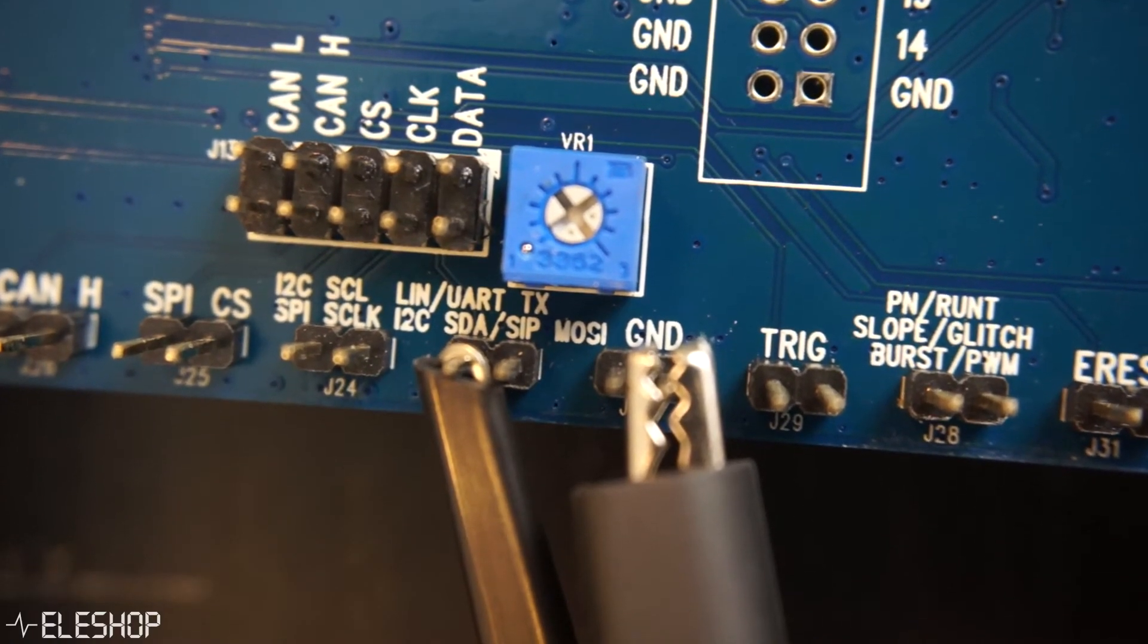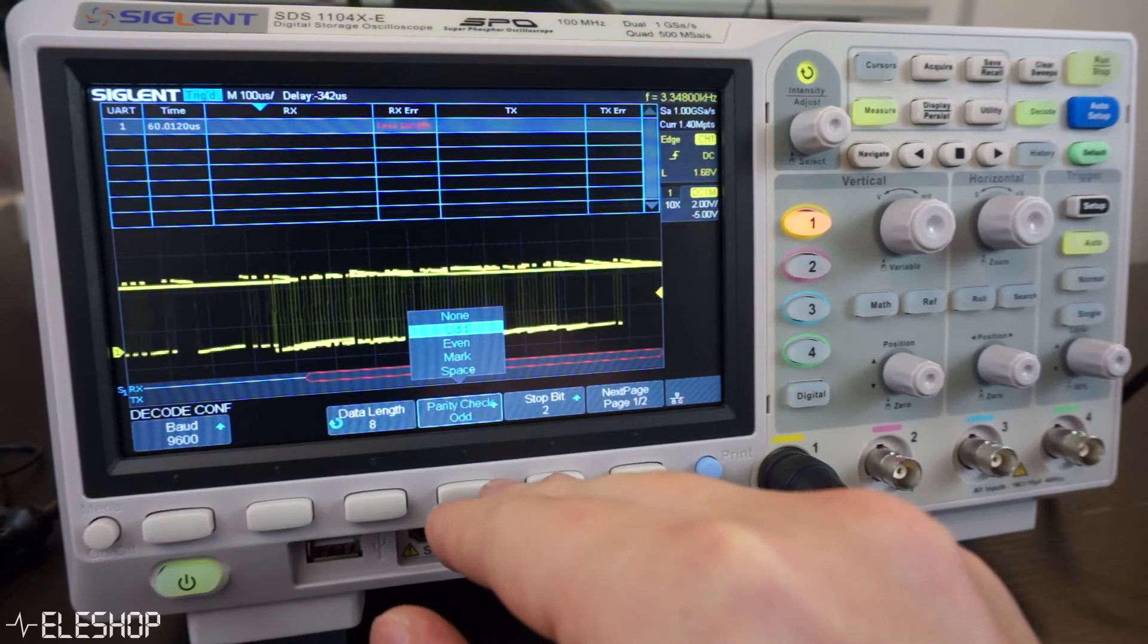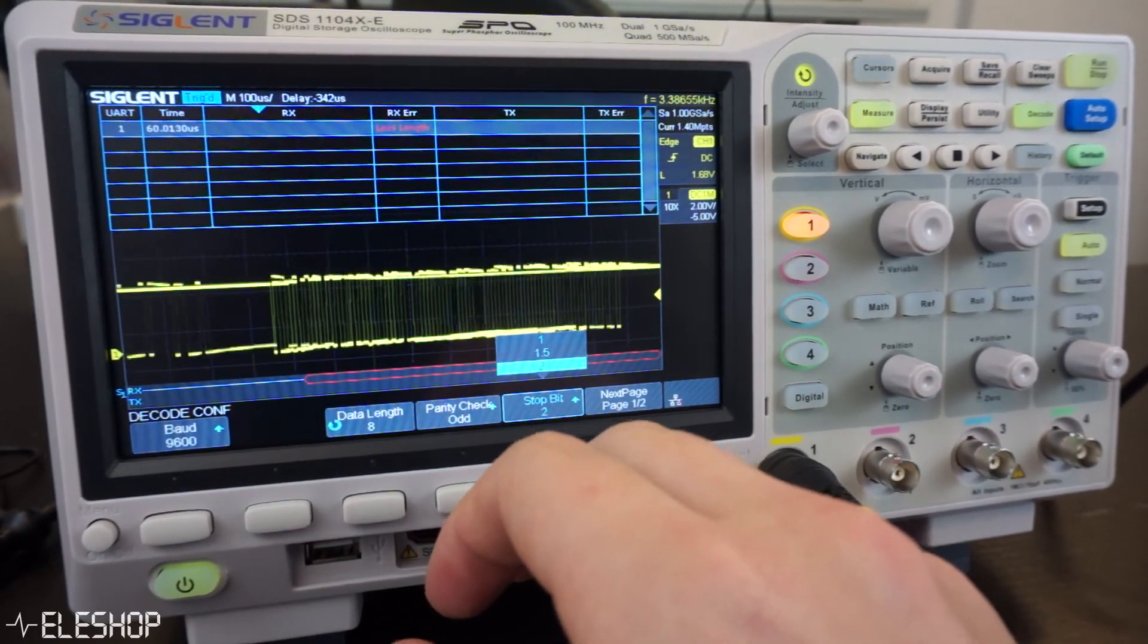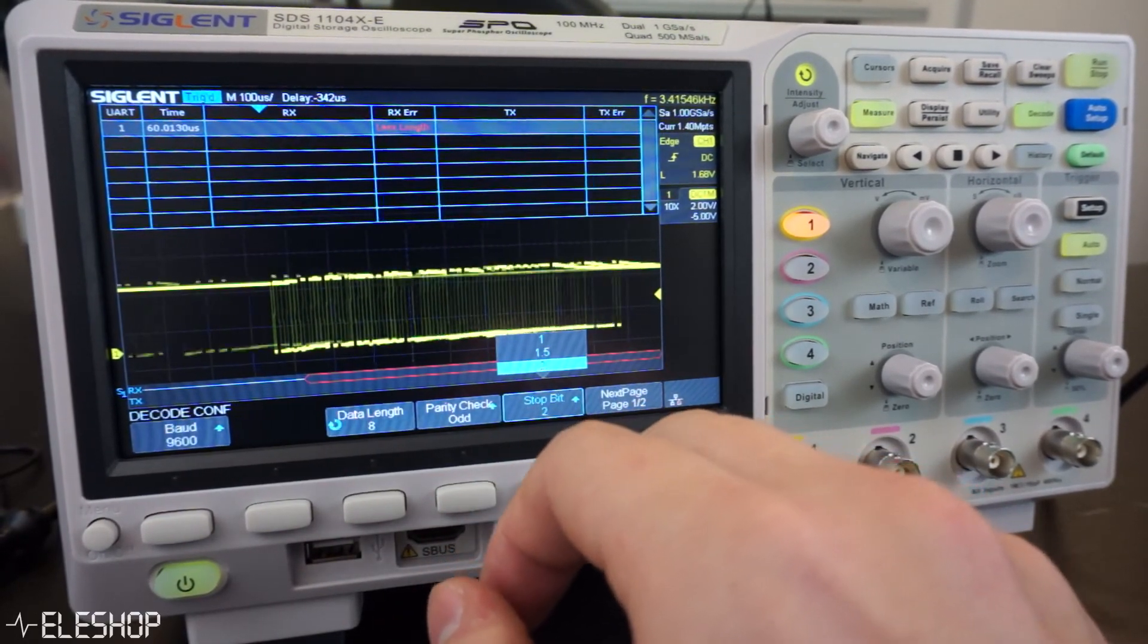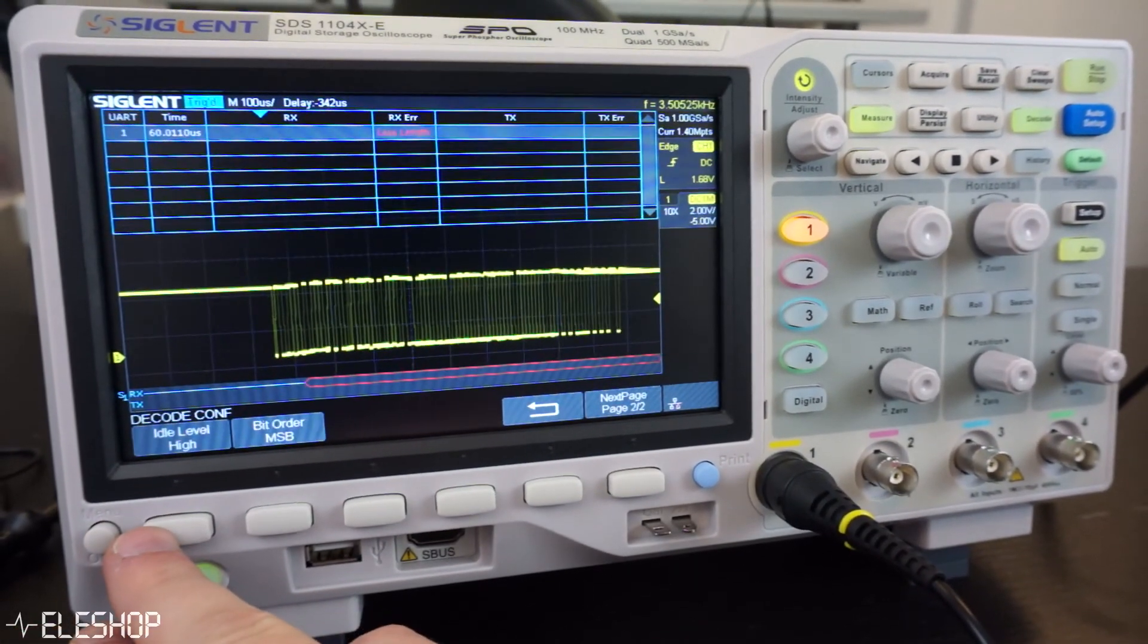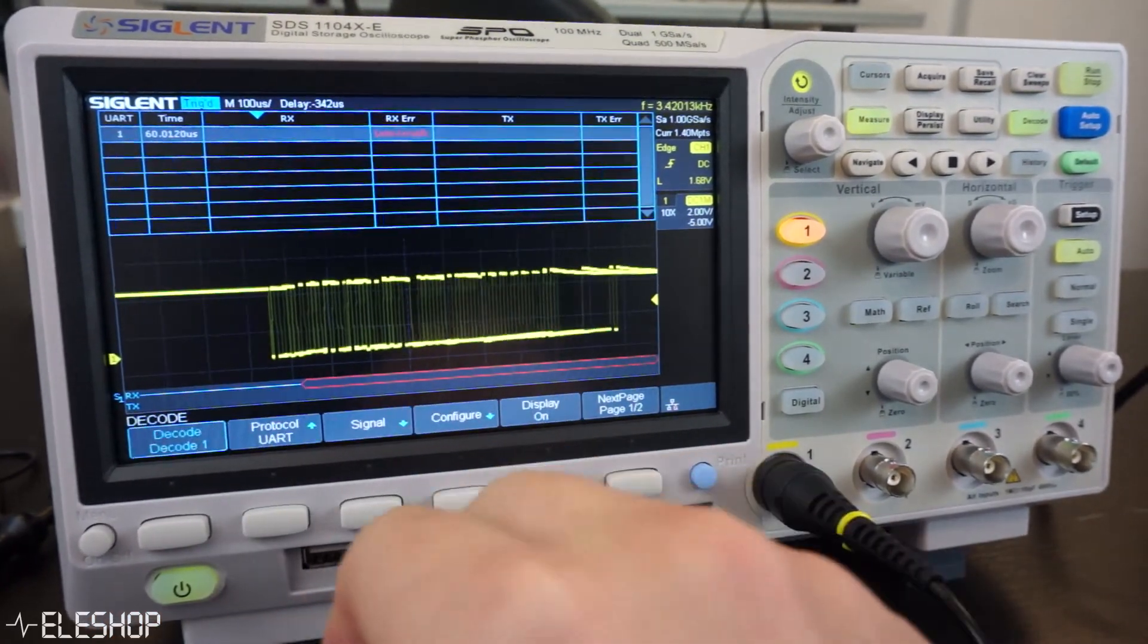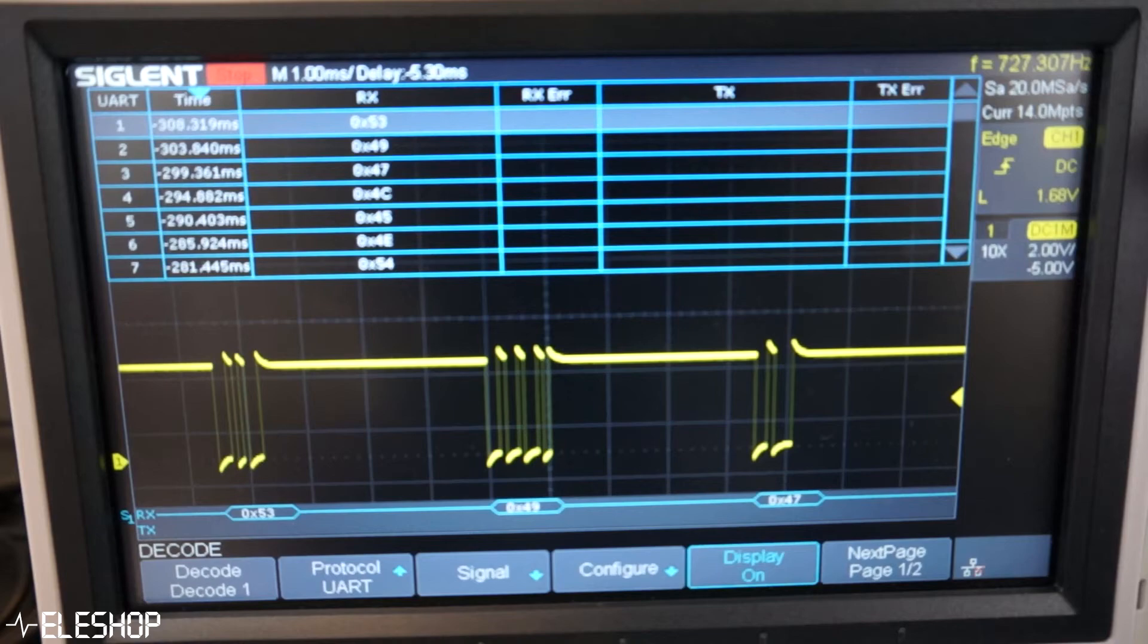UART is more tricky when setting up the oscilloscope with the correct settings. First of all, the baud rate needs to match with the testing board, otherwise wrong messages will be decoded. Also the data frame format needs to be known. For instance, the testing board outputs 8-bit signals with an odd parity bit and a 2-bit stop bit. Eventually this is the decoded signal.